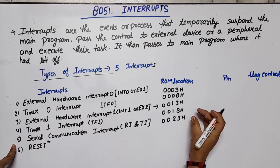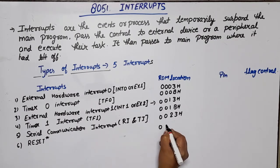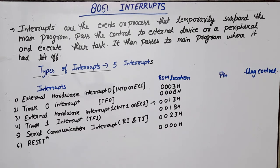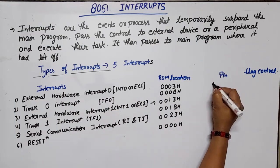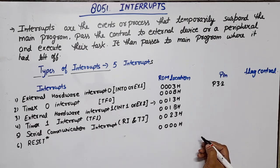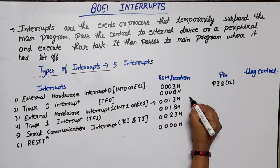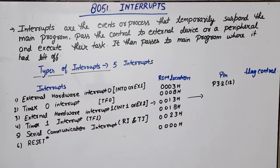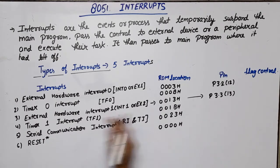When reset executes, the RAM location initializes at 0000H. Regarding pin numbers: External Hardware Interrupt 0 (INT0) is on Port 3.2, which is pin number 12. External Hardware Interrupt 1 (INT1) is on Port 3.3, which is pin number 13. Timer 0 and Timer 1 are internal interrupts. The Reset pin is pin number 9, labeled RST on the IC.